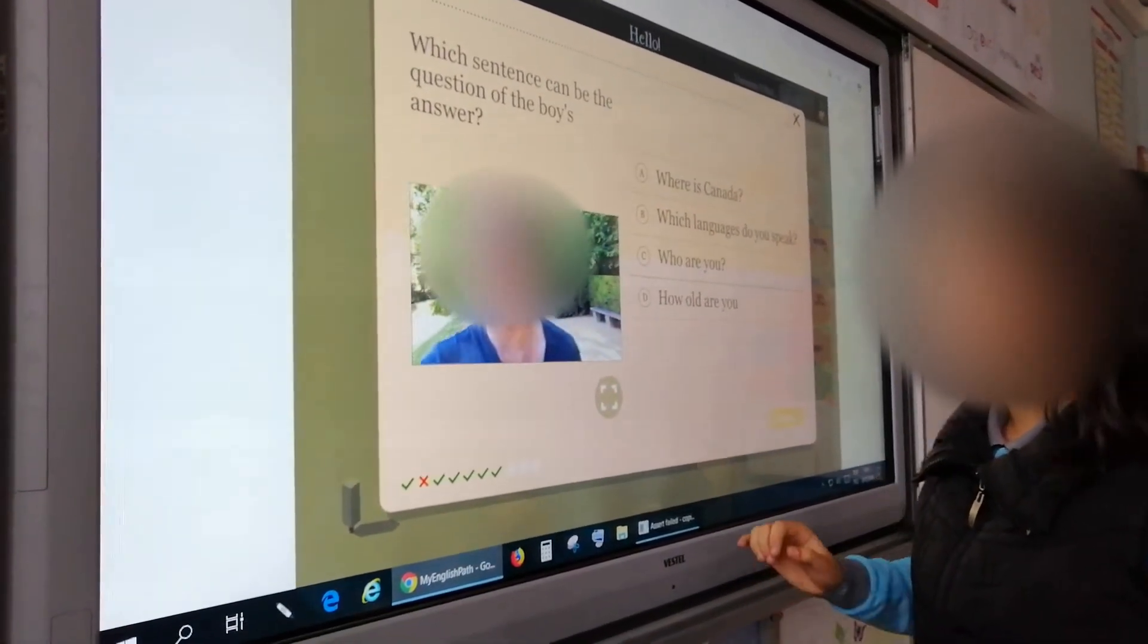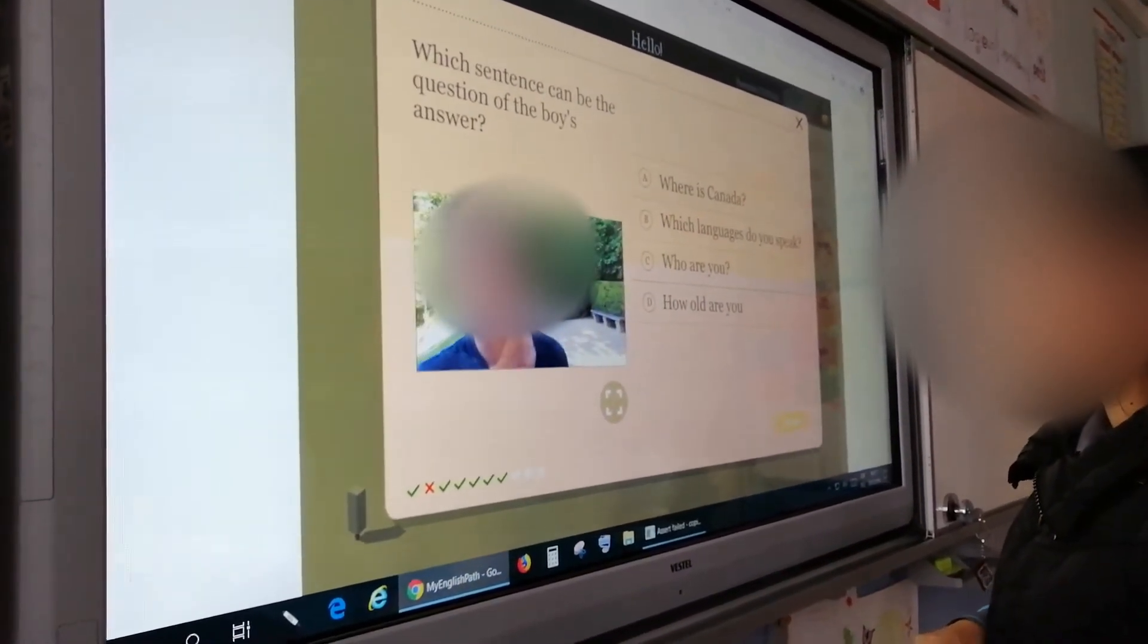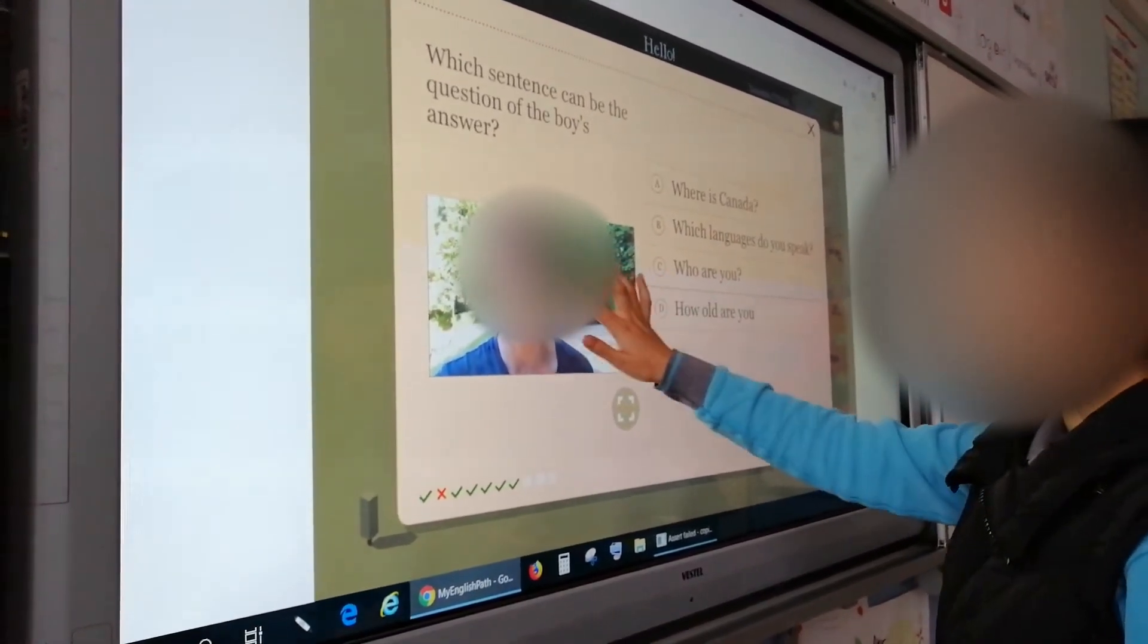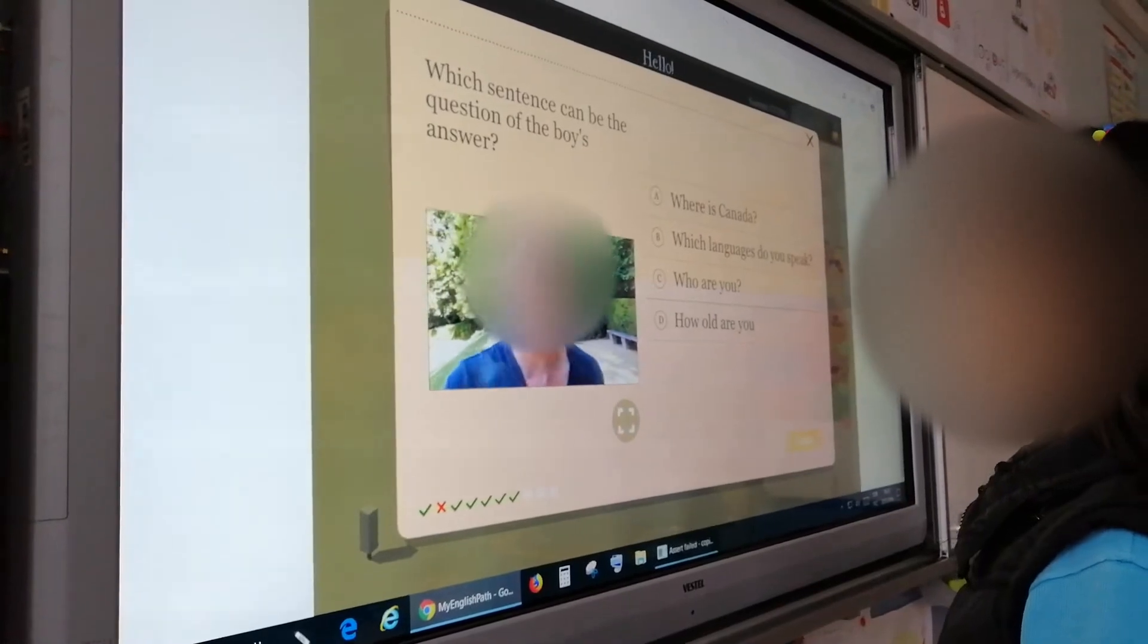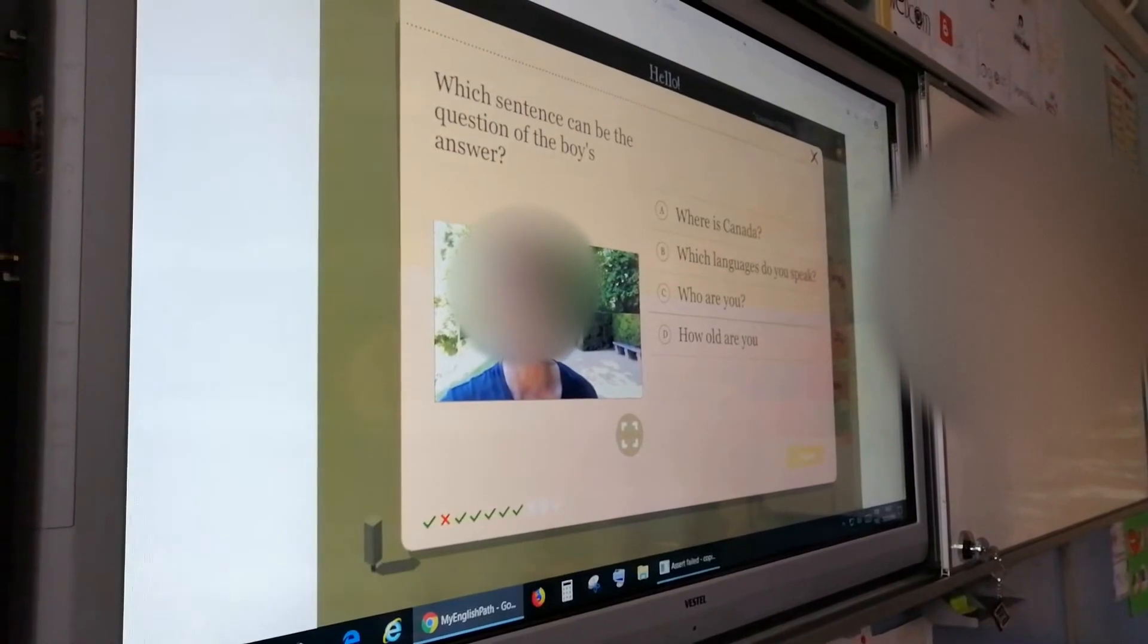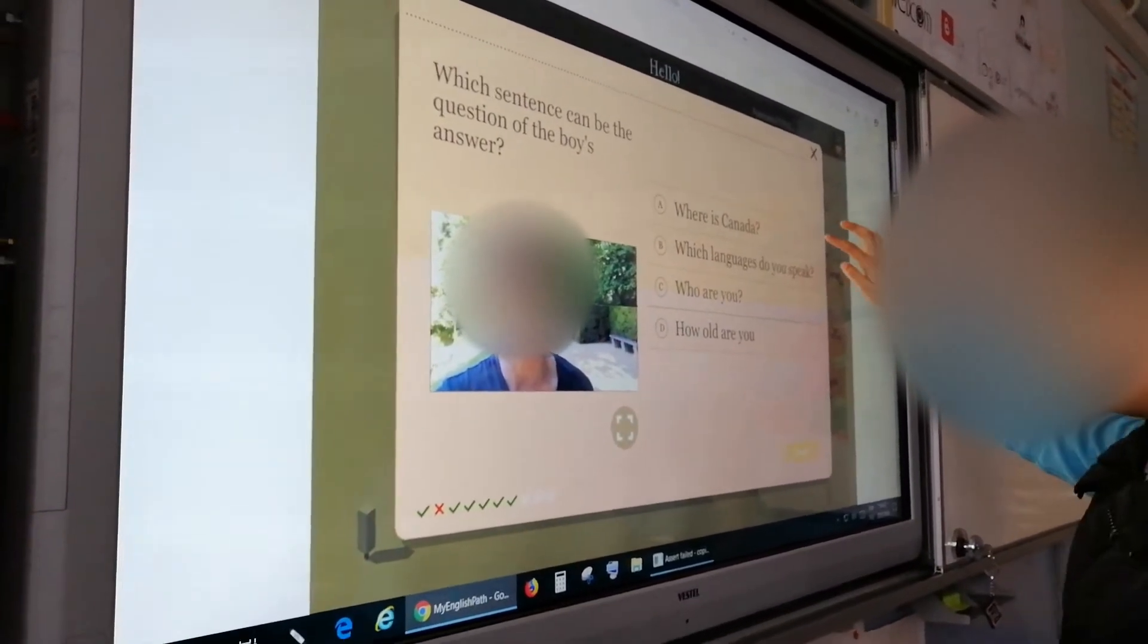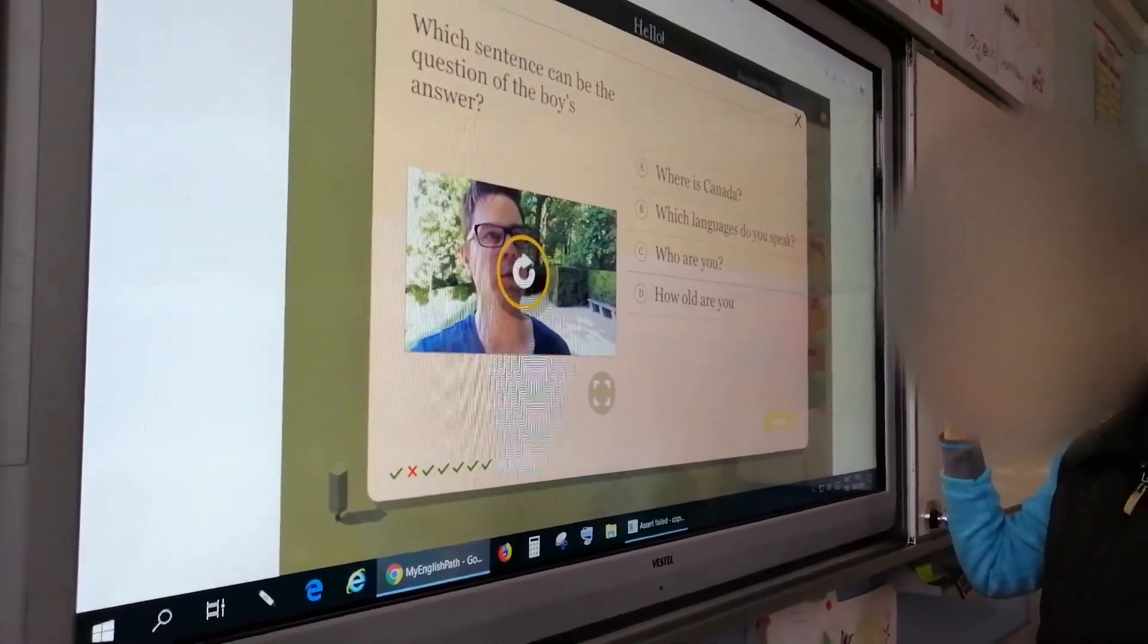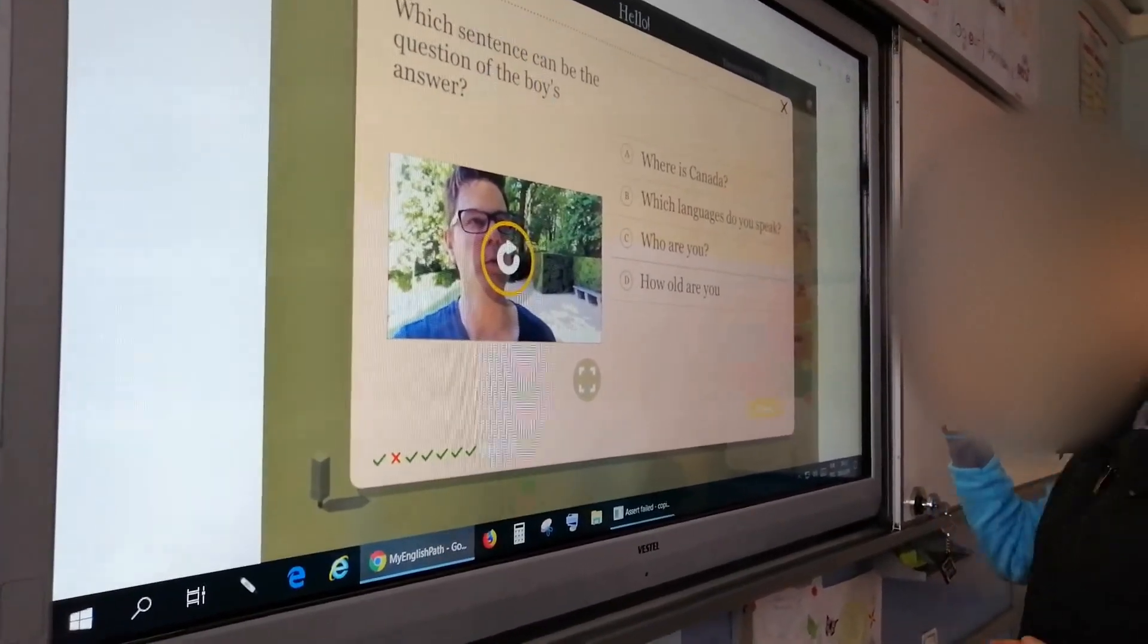For example, I say I speak French and then English and Dutch. English and Dutch. English. I didn't speak. I didn't say anything.